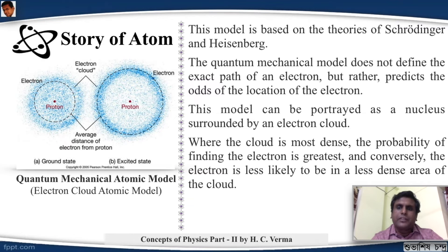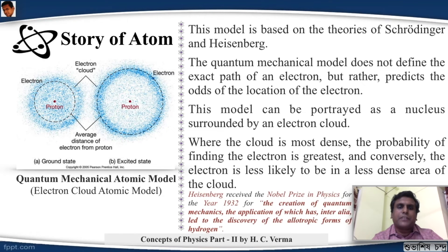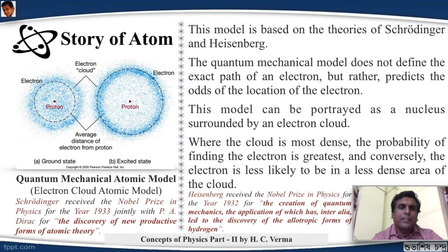Heisenberg received the Nobel Prize in Physics for the year 1932 for the creation of quantum mechanics, the application of which has inter alia led to the discovery of the allotropic forms of hydrogen. Schrödinger also received the Nobel Prize in Physics in 1933 with another genius Paul A. Dirac for the discovery of new productive forms of atomic theory.